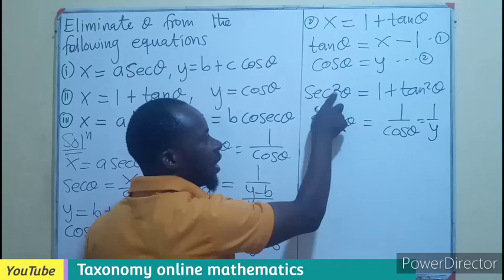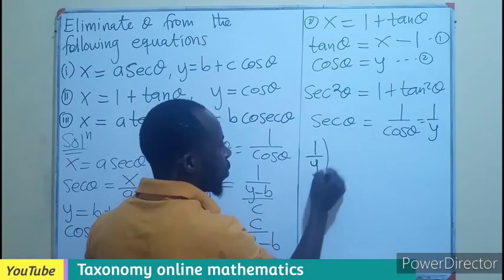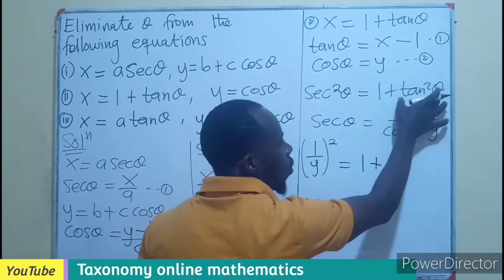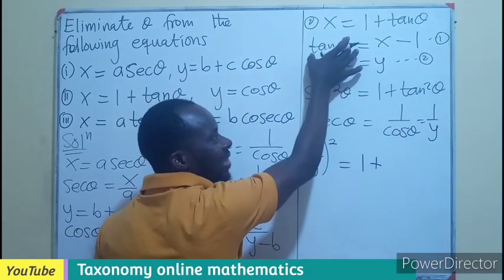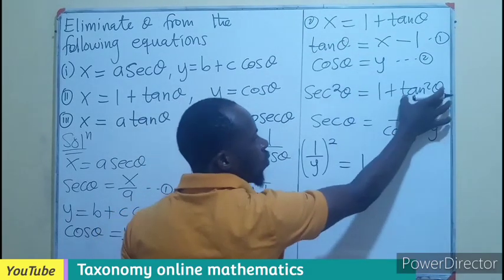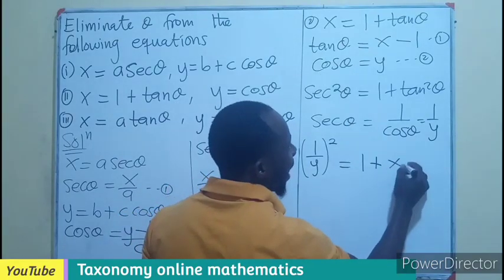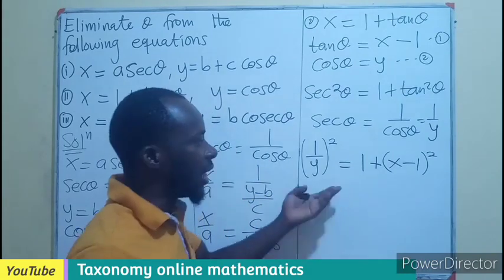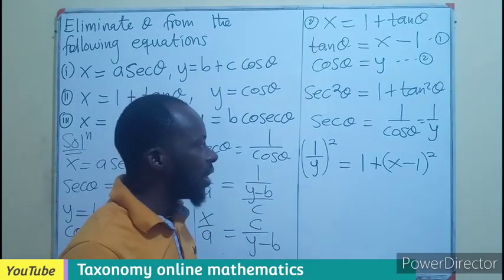The whole of this square gives me the sec square. So here, become 1 over Y all square equals 1 plus tan theta or tan square theta or tan theta, which is going to be the square of the value of tan theta. And that is going to be X minus 1 all square. I can leave it this way.